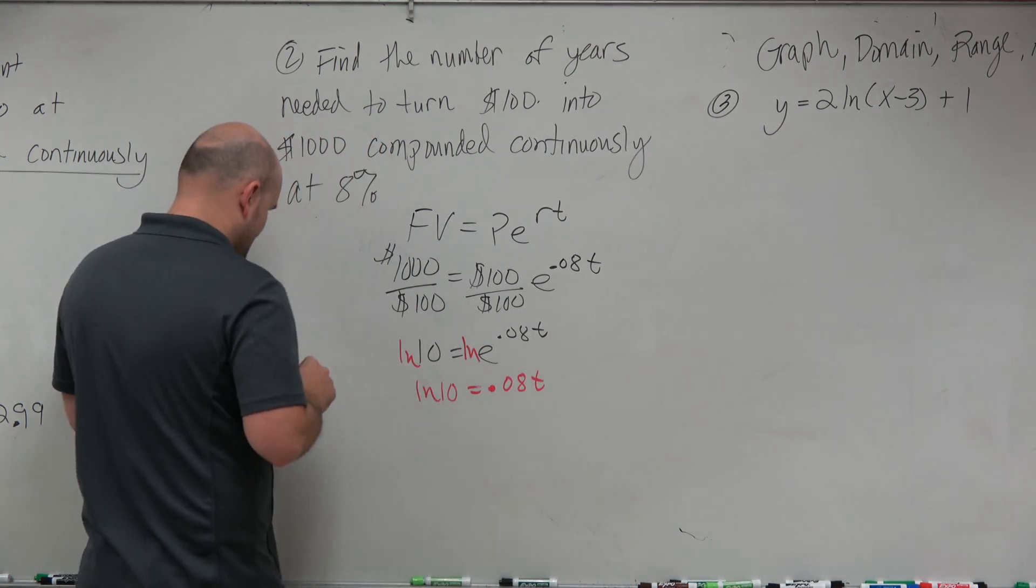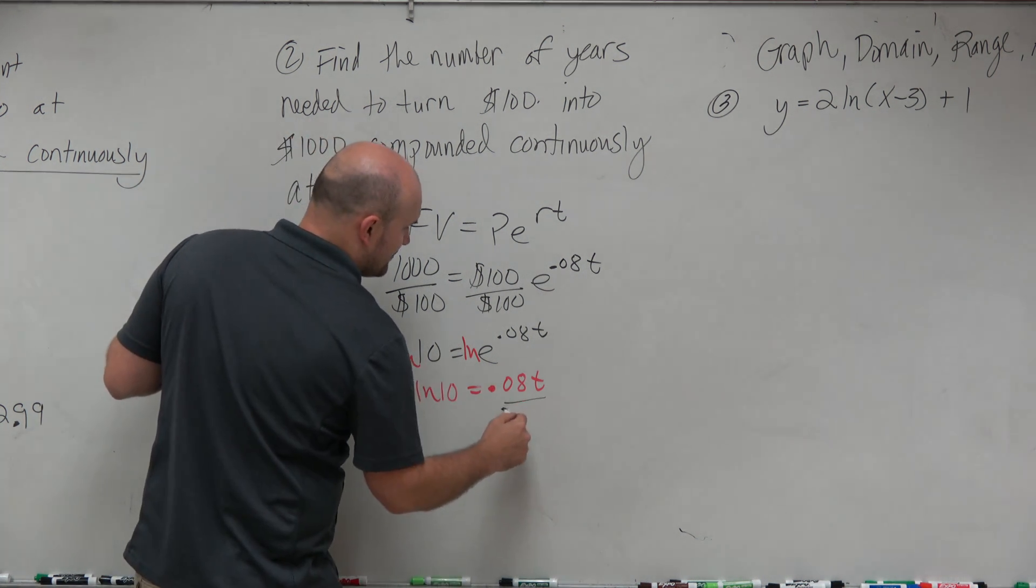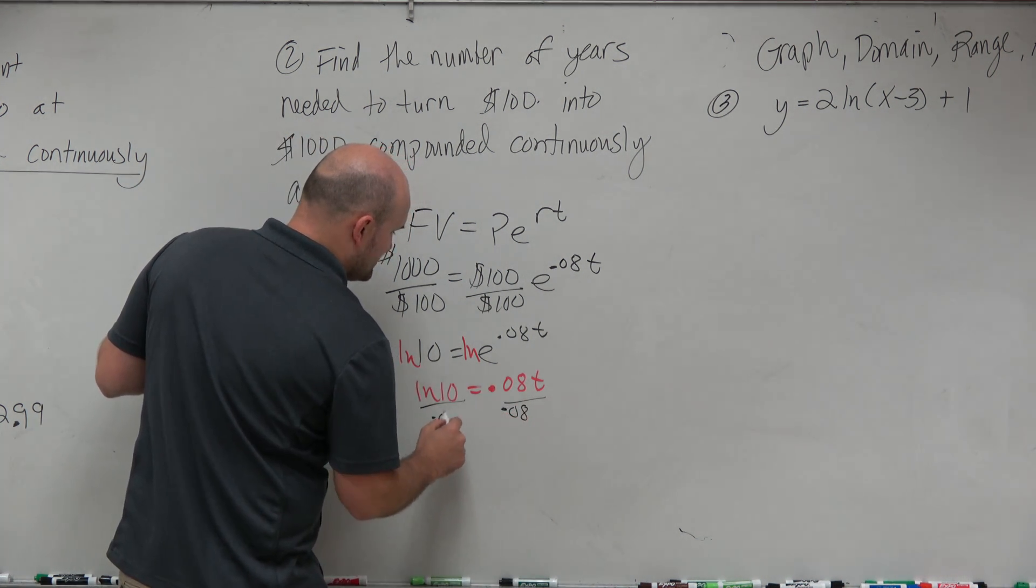So now, to solve for T, all I simply need to do is divide by 0.08. Divide by 0.08.